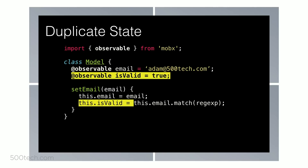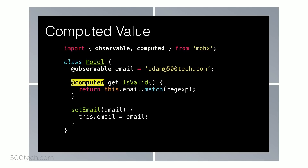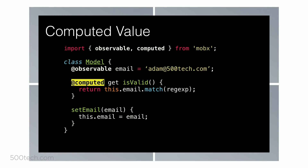MobX also handles duplicate state. If you have a validity flag on your model saying whether the email is valid, keeping that as state duplicates what can be inferred from the email value itself. In MobX we handle this with something called Computed. It acts the same as Autorun but also caches the value. The first time you call isValid, MobX runs the function, calculates the validity, and caches the result. Every subsequent call returns the cached value, making applications very performant out of the box. Whenever the email changes, the dependency tree mechanism triggers recalculation of isValid.